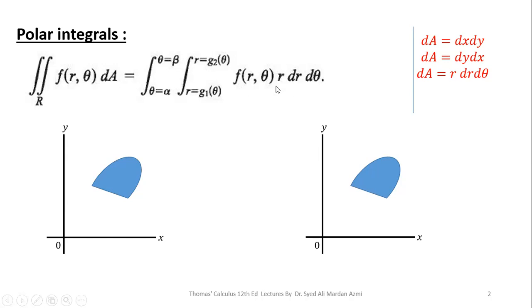f(R, theta) is the function whose integration has to be done, and the limits of R are given as g1(theta) and g2(theta). Please note that since R is our inner variable, its limits may be constant or variable. Theta is our outer variable, and the limits of the outer variable are always in the form of constant numbers. We calculate the limits of theta in the form of angles in radian measure in counterclockwise direction with the positive x-axis.